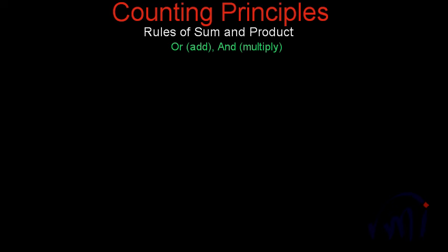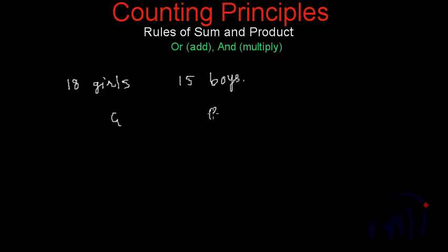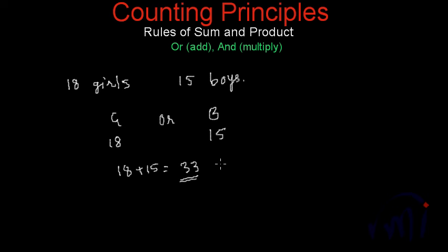Suppose you have a class of students where there are 18 girls and 15 boys, and there is an event for which you need one student. How many ways can you select that student? You have two choices: either you can select a girl or you can select a boy. If only one student is to be selected, for girls you have 18 choices and for selecting a boy you have 15 choices. That means for selecting a child you actually have 18 plus 15, which is 33 choices.